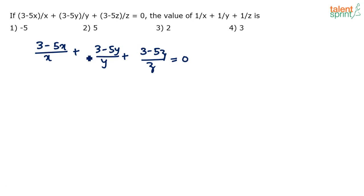Just try to split the terms here. 3 minus 5x by x is like 3 by x minus 5, right? Because 5x by x is 5. Plus from the second term, we'll get 3 by y minus 5. And from the third term, we'll get 3 by z minus 5 equals 0. So if we take 3 common from all these terms - 3 by x, 3 by y and 3 by z - what do we get?